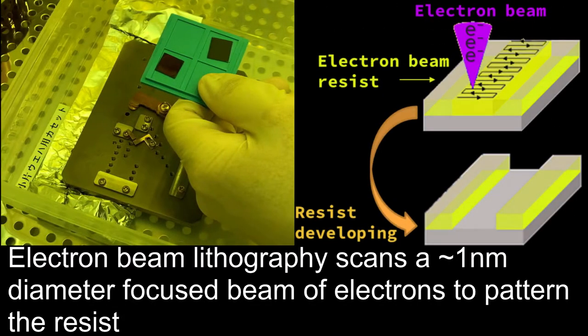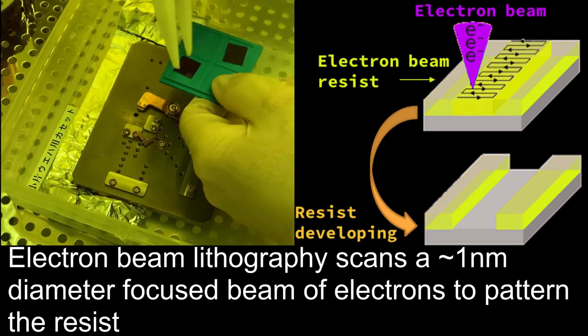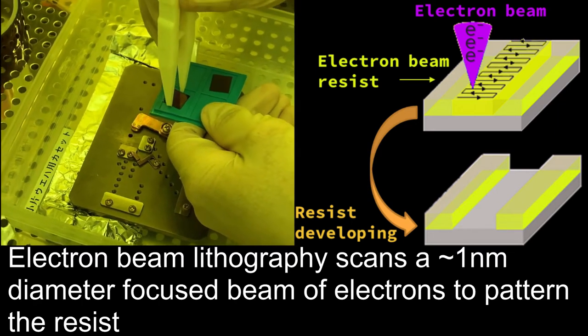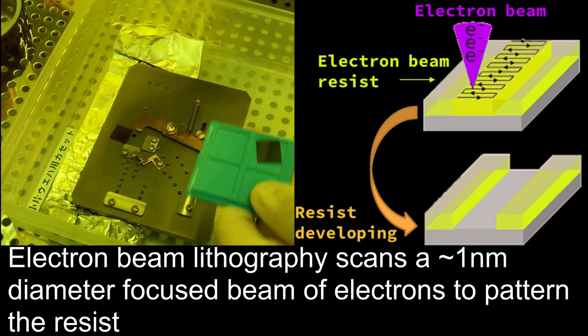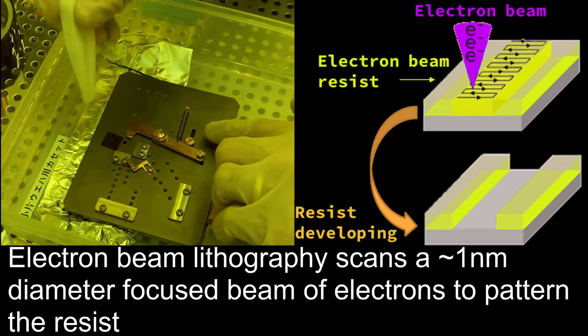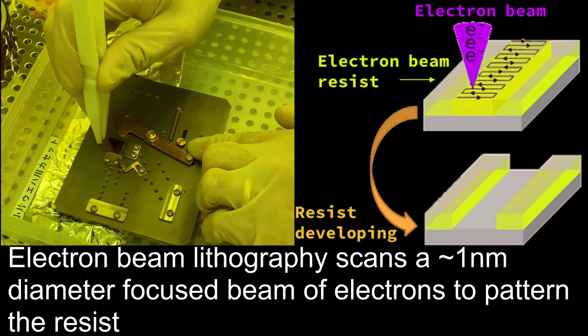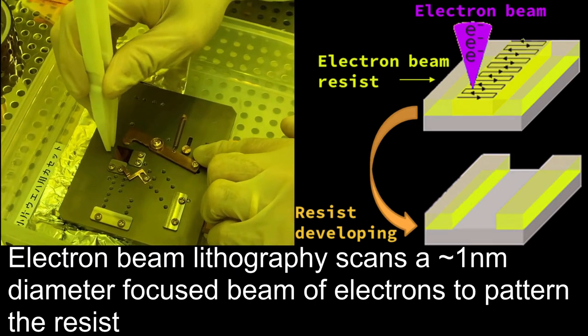In addition to photolithography, we also pattern the metal gates using electron beam lithography. In this technique, an electron beam resist is patterned by a 1 nm focused electron beam.